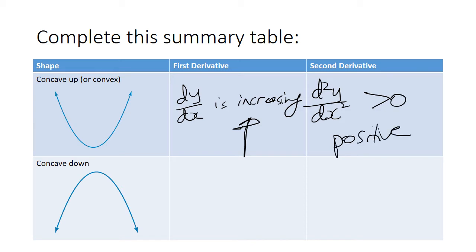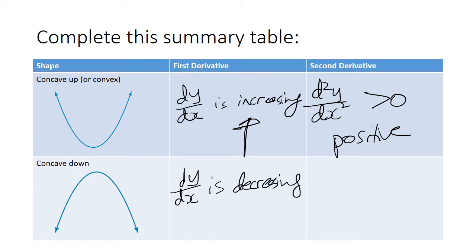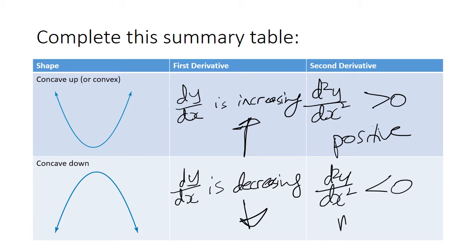Now let's look at a graph that concaves down. The gradient is very positive and very steep in the positive direction. It becomes less and less positive until it hits zero, then becomes negative and very negative. So the first derivative of the concaving-down graph shows the gradient is decreasing. If the gradient is decreasing, your first derivative would be decreasing, and therefore the second derivative would be less than zero — negative.